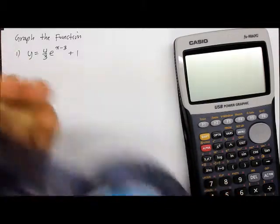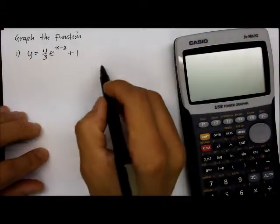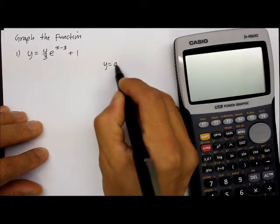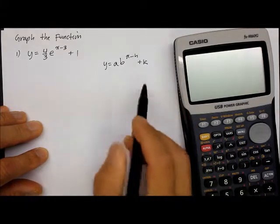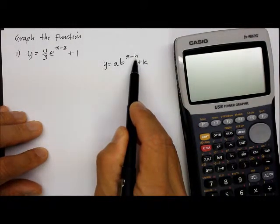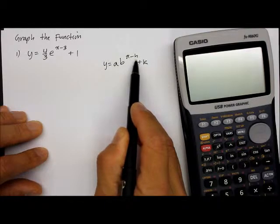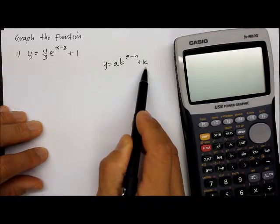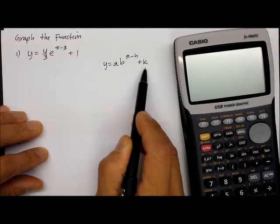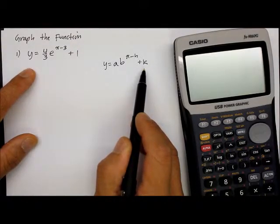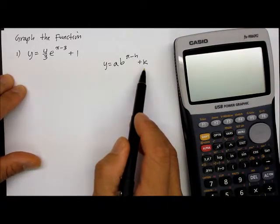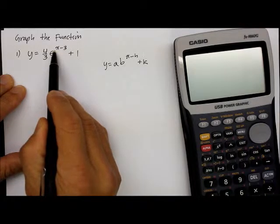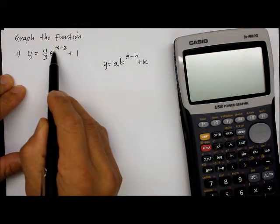Remember when we talked about the exponential functions written as y equals a times b raised to x minus h plus k, where the inverse of h tells you which way left or right to shift and k tells you which way up or down to shift from the initial graph? That's what this is. First of all, look at the coefficient of the exponent x. Is that positive? Yeah, that means this is an exponential growth function.